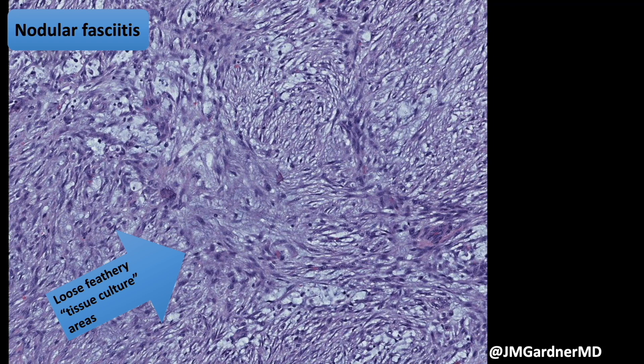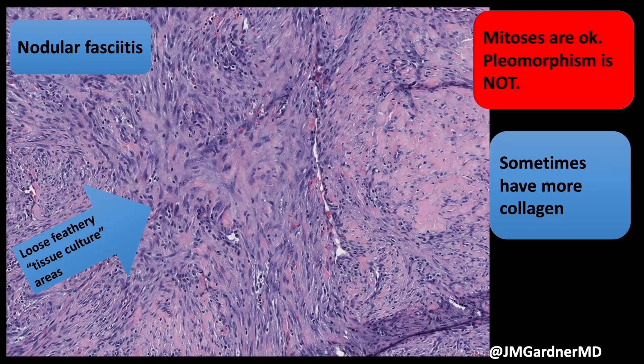Here's the so-called tissue culture pattern — a term that doesn't really have meaning to me outside of nodular fasciitis, since I've never grown fibroblasts in a tissue culture dish. The terms I prefer to describe these areas are 'loose and feathery,' but some people call them tissue culture. Whatever visual cue works for you, go for it.